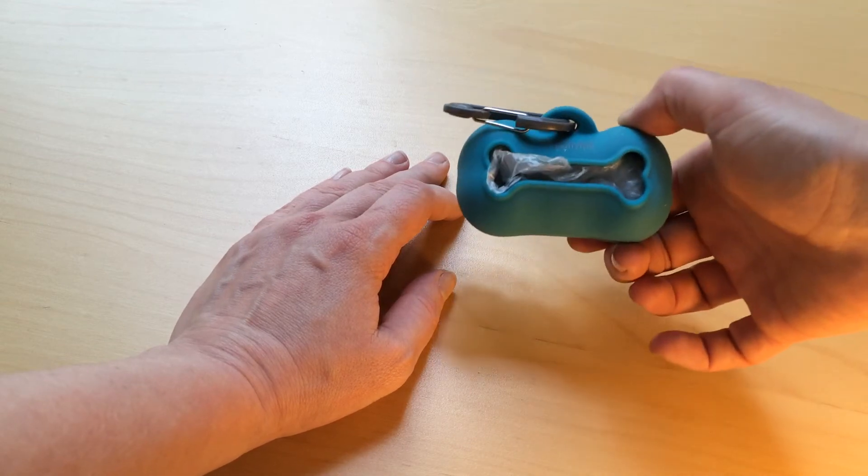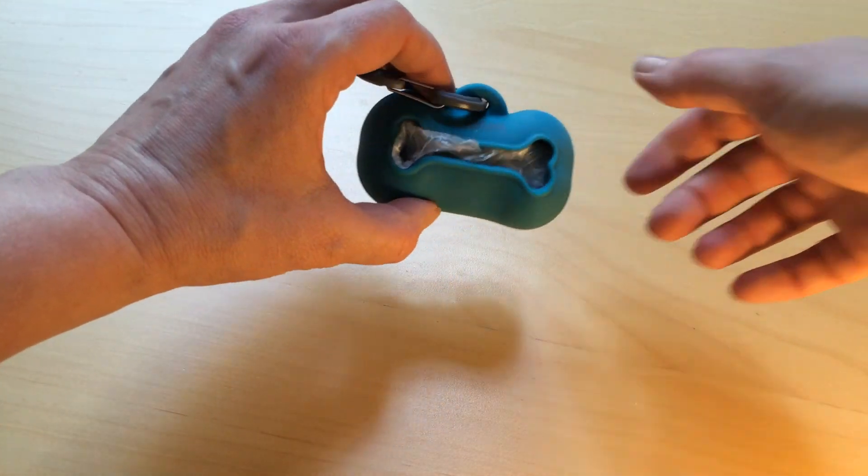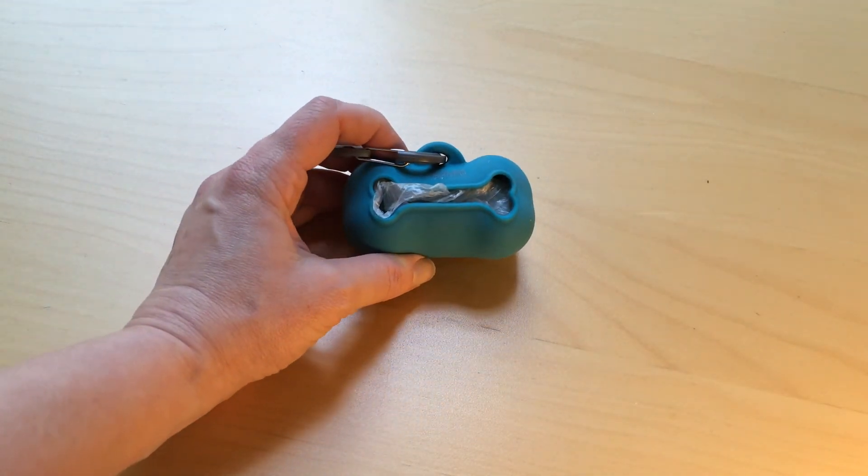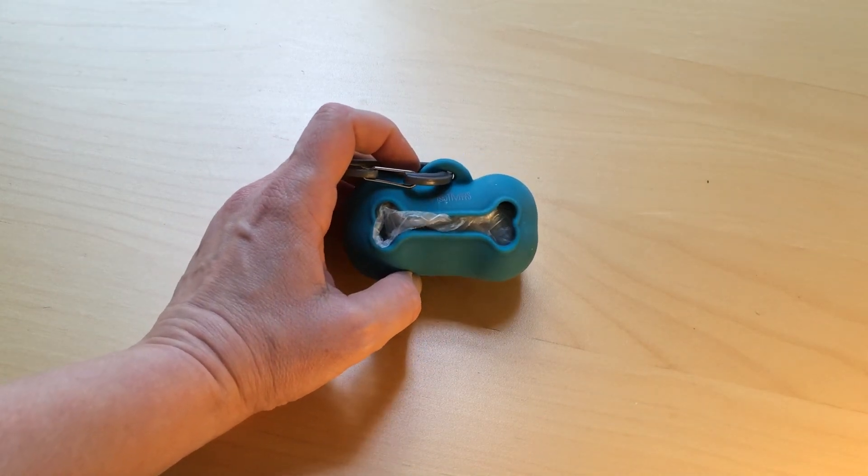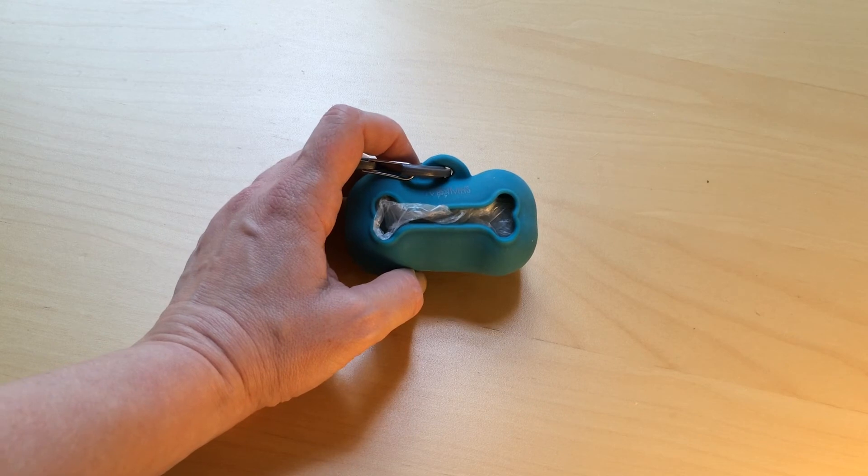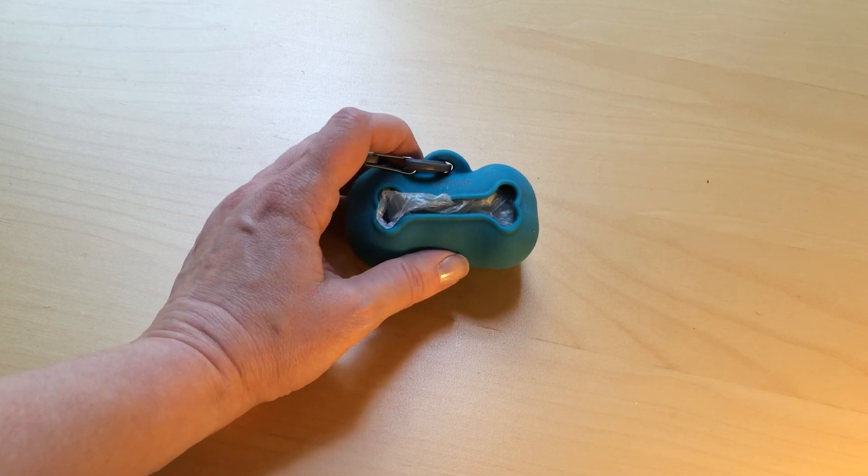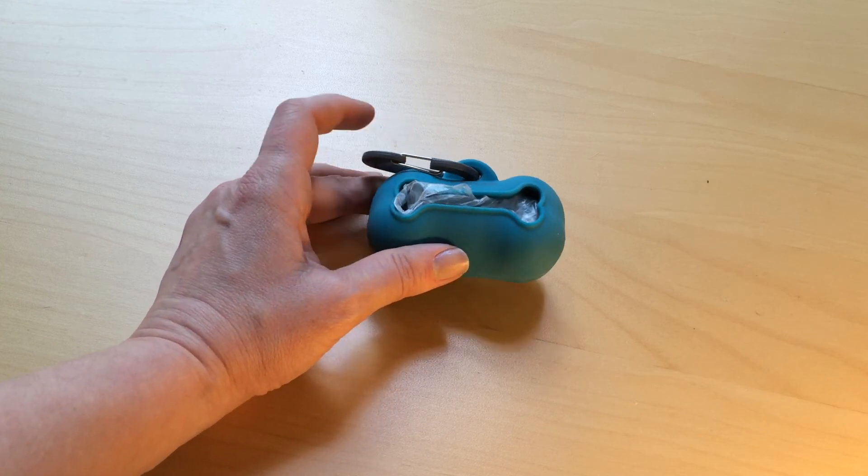So that is the Messy Mutts Poop Bag Holder. And it comes in a couple of different colors, blue, green, and I believe it's red. So there's that. And we like it.